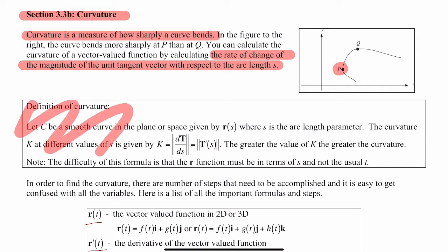So here's the definition of curvature. Let C be a smooth curve in the plane or space given by r(s), where s is the arc length parameter. The curvature K at different values of s is given by this formula here. The greater the value of K, the greater the curvature.